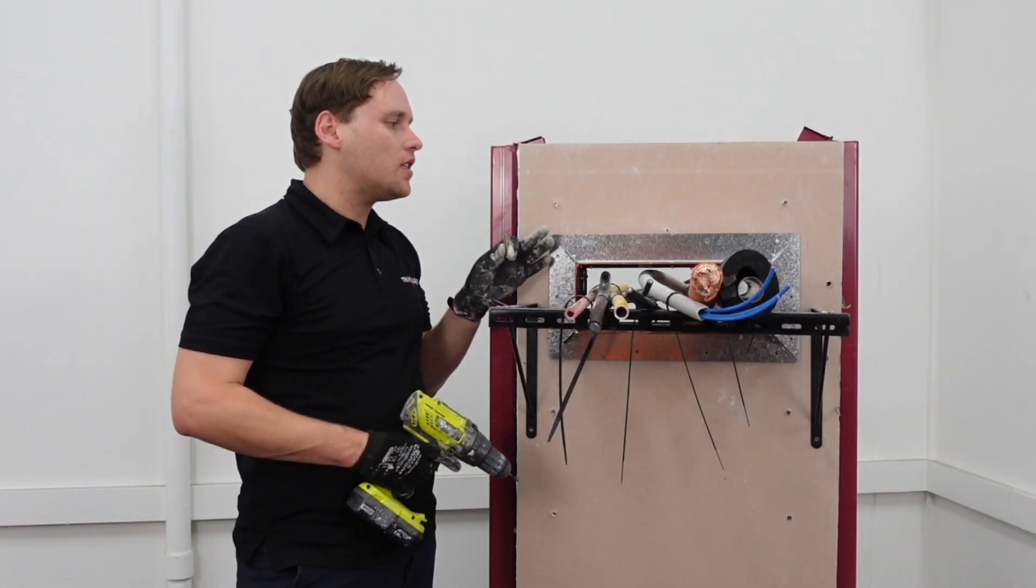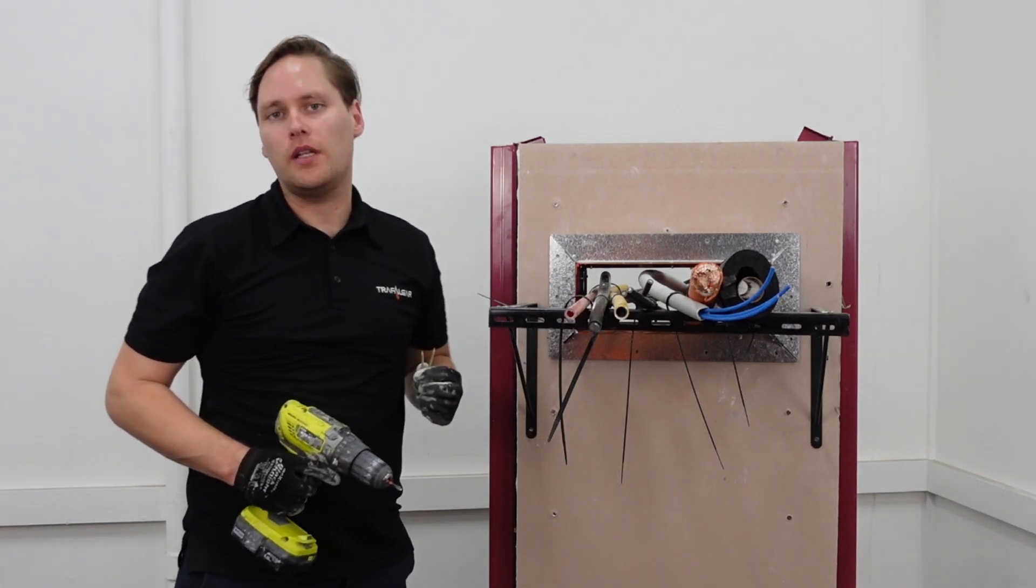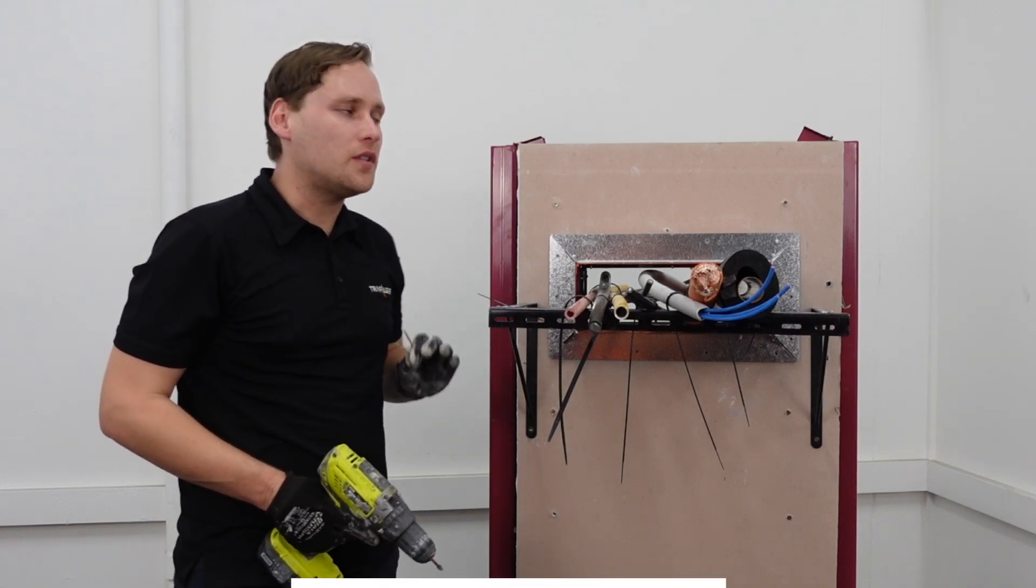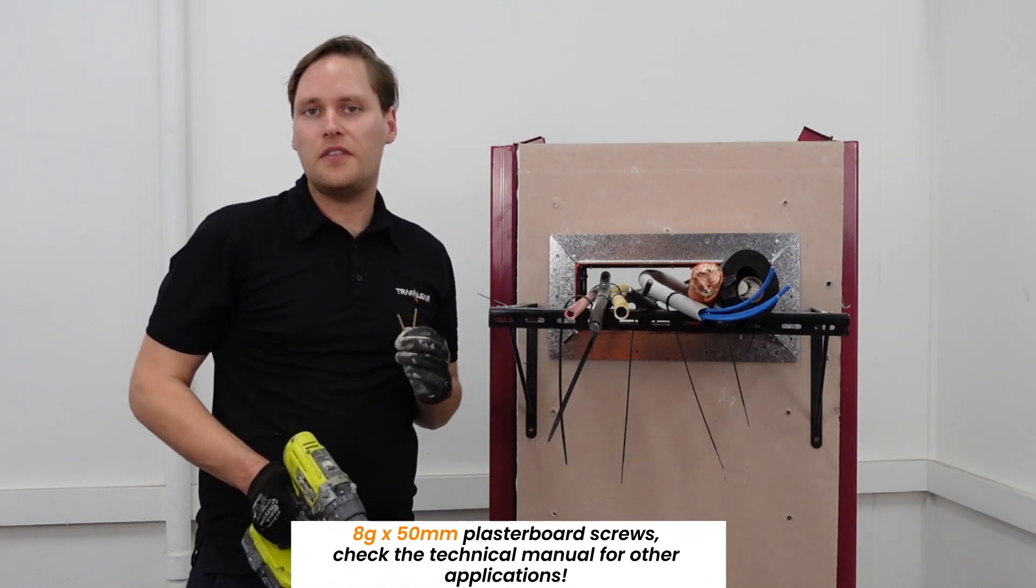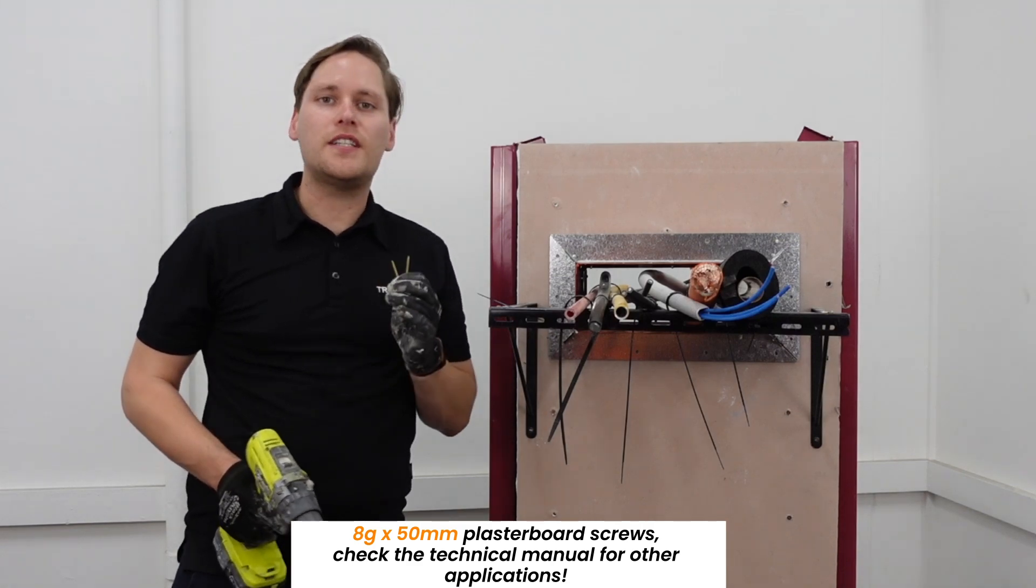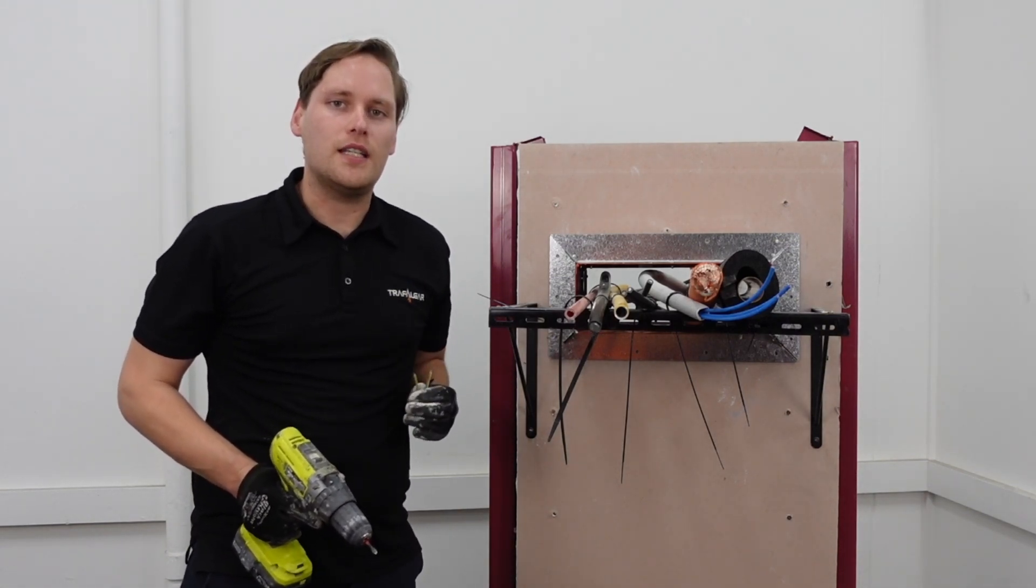With your flange installed and the super stopper positioned centrally to the wall, we can now fix it in place. The screw fixings you're going to need to use depend on the wall type. So if it's plasterboard, we're going to use 8 gauge by 50mm plasterboard screws. But if you've got a different wall or floor type, make sure you check the technical manual available at tfire.com.au for the correct fixings for your application.